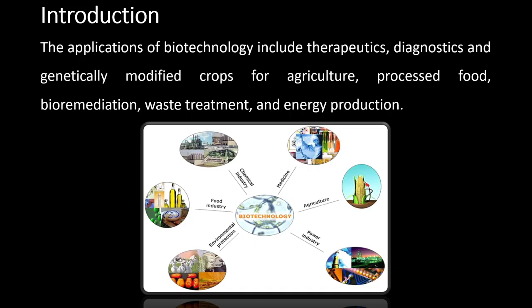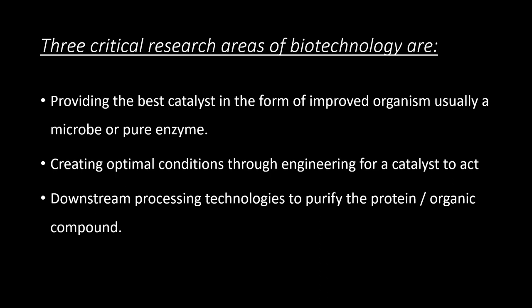The introduction shows in which areas biotechnology can be applied. From this pictorial representation you can see that biotechnology can be used in environmental protection, food industry, chemical industry, medicine, agriculture, and power industry. In today's chapter we are going to concentrate on biotechnological applications in agriculture.